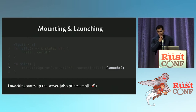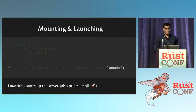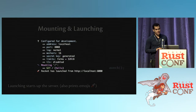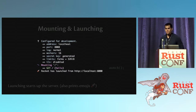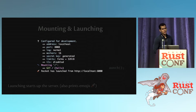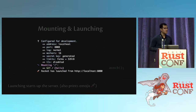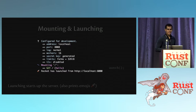The emojis were like the second GitHub issue after Rocket launched: 'Emojis, stop, please.' But that launch output looks like this — you get three emojis. Rocket tries to be very helpful while you're developing: it tells you everything about the environment, where it's actually serving, the configuration, what routes it knows about, and where your application is being served. You also can't get rid of the emojis, which is great — you can try, they'll come back.